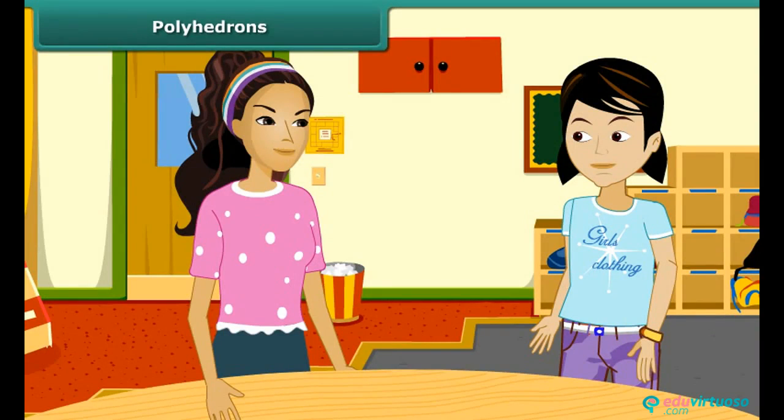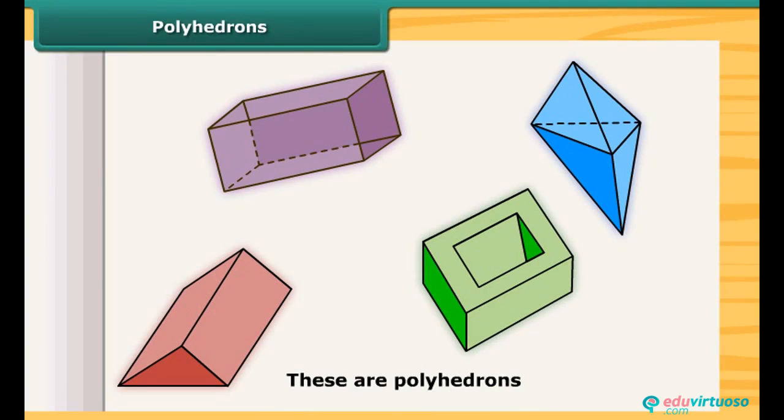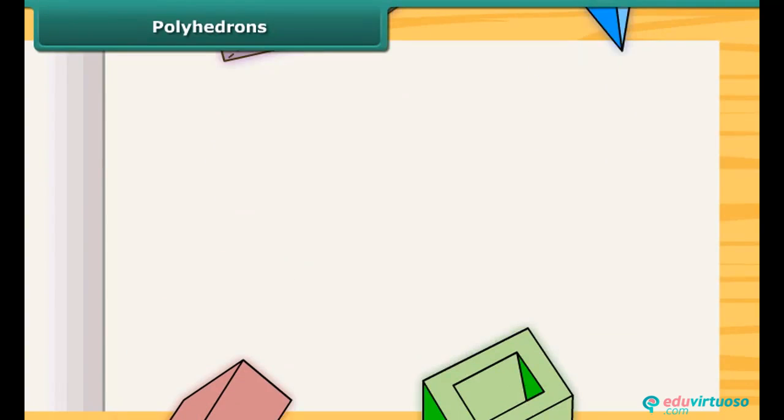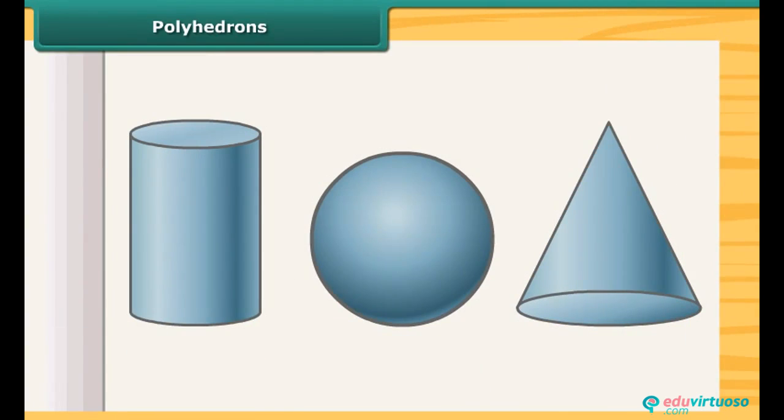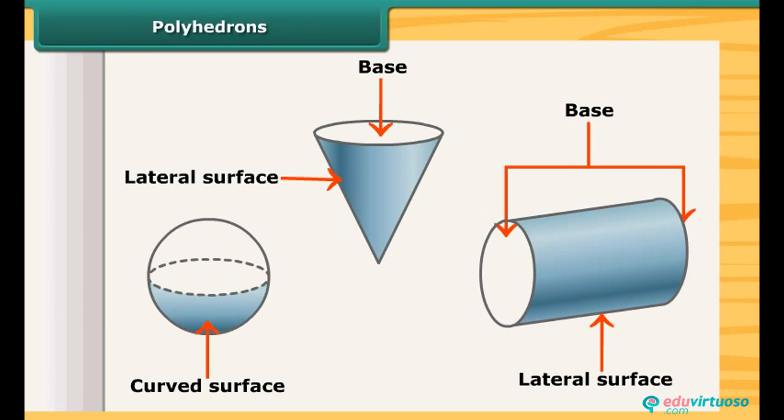Do you know what we call a solid having flat faces, edges and vertices? Ummm, no. Those solids are called polyhedrons. These all solids are polyhedrons. Are these objects polyhedrons? No, these are not polyhedrons. You are right. These are not polyhedrons because they do not have flat faces.